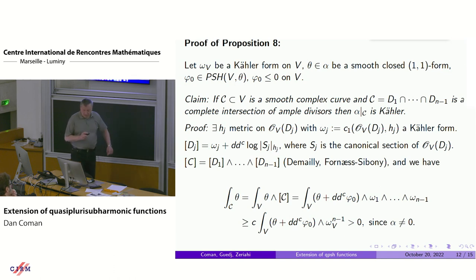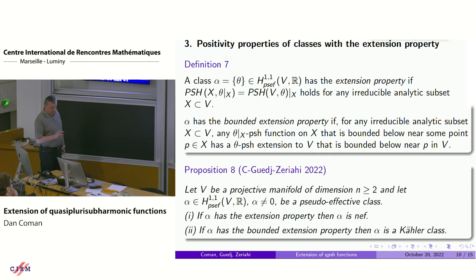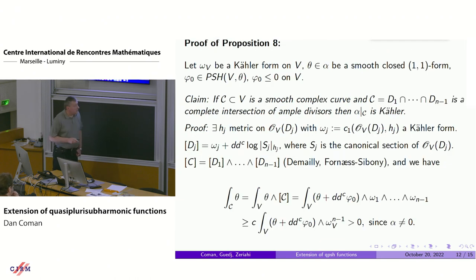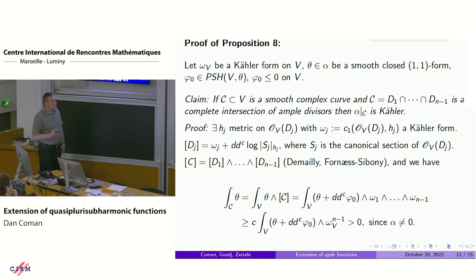So let's fix a Kähler form on V. We want to show that if the pseudo-effective class has the extension property, then the class is nef, and if it has the bounded extension property, it is Kähler. We fix a Kähler form on V, take a smooth closed representative of alpha, and because the class is pseudo-effective, we can find a theta-plurisubharmonic function which is negative on V. Following ideas from Matsumura's proof, we notice that if you have smooth curves that are complete intersections of n-1 ample divisors, then the restriction of the class to such a curve must be Kähler.